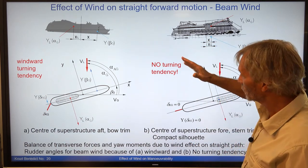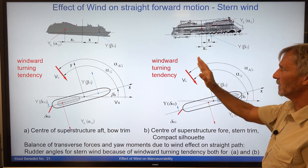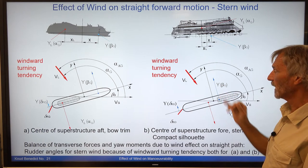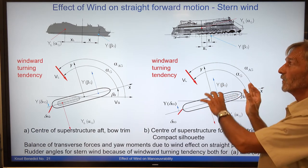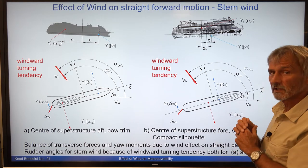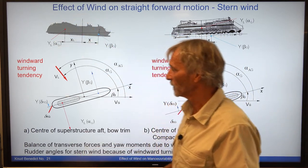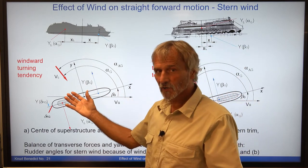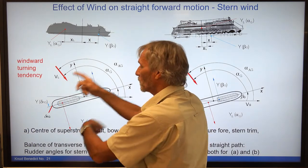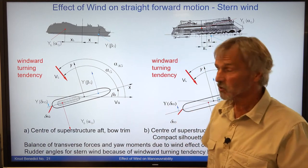With stern wind, the wind force has moved even further to the stern for this ship, placing it behind the hydrodynamic force — so this ship would also have a windward turning tendency and needs a rudder angle to the lee side. For the ship with the superstructure center aft, it's an even stronger windward turning tendency because both forces have a large difference in levers, creating a big turning moment into the wind requiring a strong rudder angle.